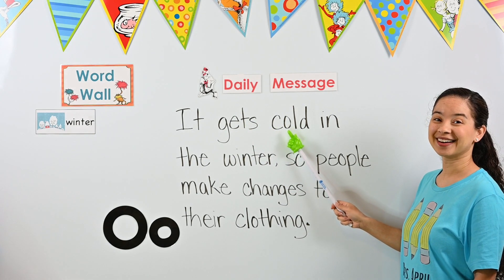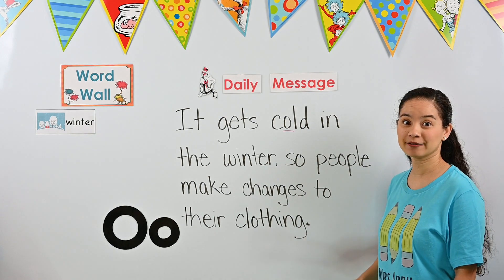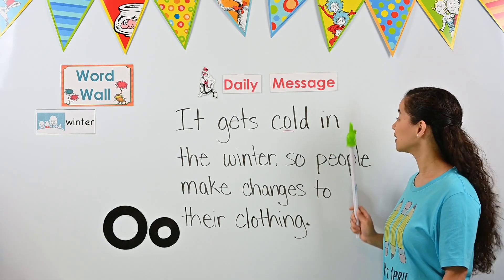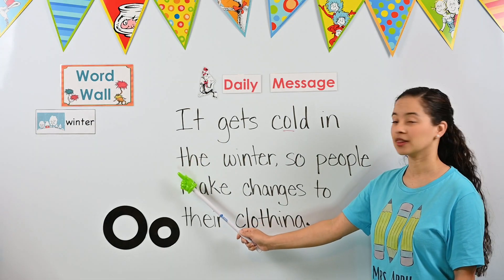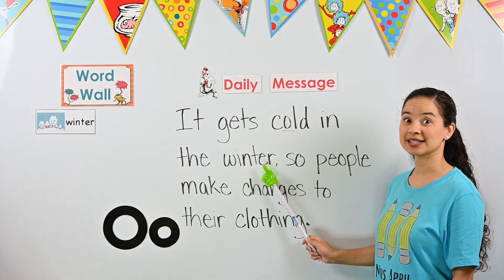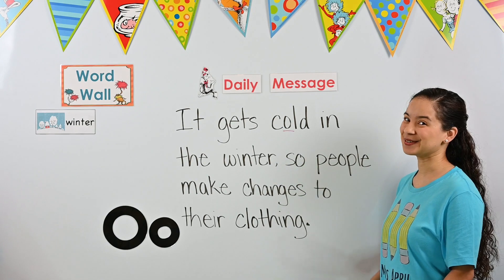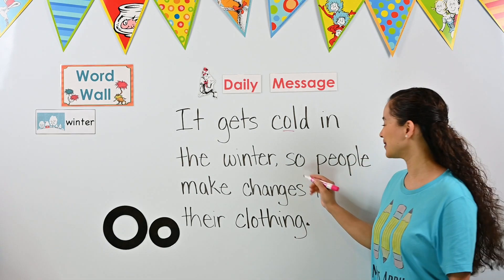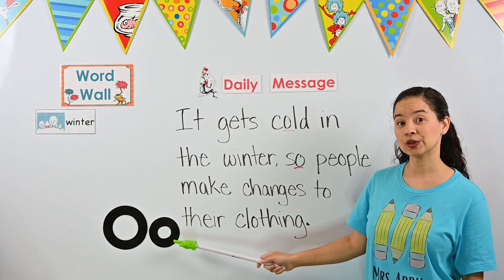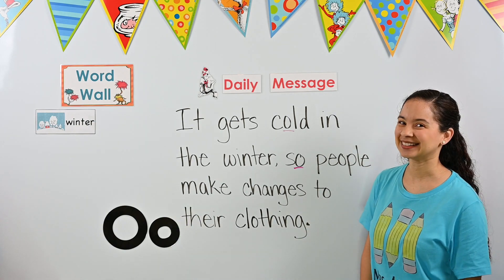Did you say 'stop'? Great work — this is an O. Let's underline it. Let's keep looking to see if we can find more. We're at the end of the line, so we need to go down one line and back to the left, then keep moving to the right — that's how we read. Did you say 'stop'? If you did, you have a great eye, because this is an O. You are an awesome letter detective. Is this an uppercase O or a lowercase O? It's a lowercase O.